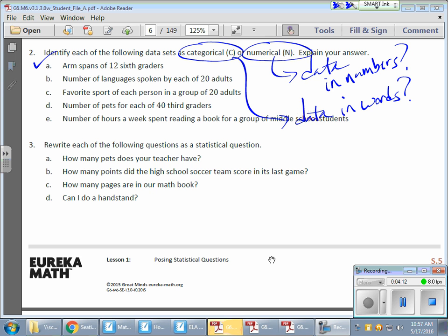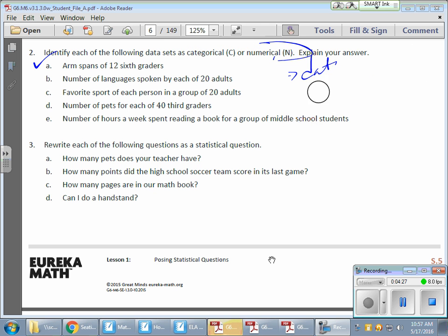Let's take a look at A: Armspans of 12 sixth graders. Armspans are measured in numbers - for example, an armspan could be 30 inches or 32 inches. That data is written in the form of numbers.